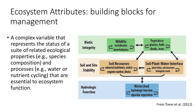In order to understand the importance of indicators and methods, it's necessary to first know about ecosystem attributes. Simply put, an ecosystem attribute is a complex variable that represents the status of a suite of related ecological properties, like species composition, and processes, like water and nutrient cycling, that are essential to ecosystem function.